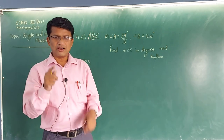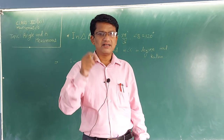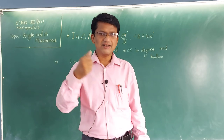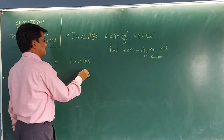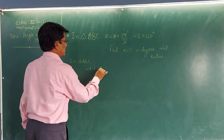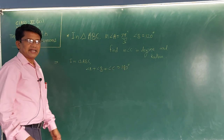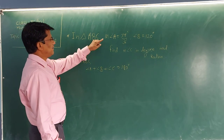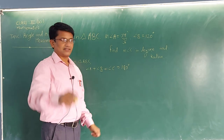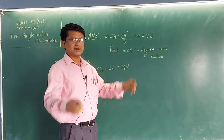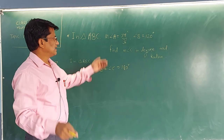In triangle ABC, we know from school level one basic property of a triangle: for any type of triangle, the sum of the first angle, second angle, and third angle gives us 180 degrees. So in triangle ABC, angle A plus angle B plus angle C equals 180 degrees. Now substitute values. Angle A is in radian and angle B is in degree, so first convert angle A into degree form.